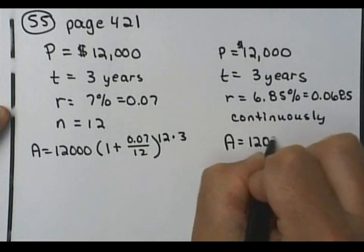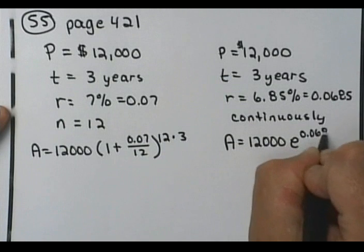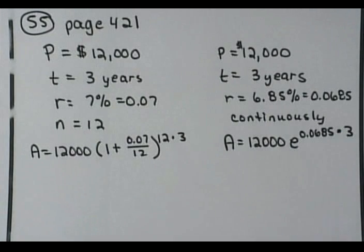And over here, I'm going to have 12,000 times e to the 0.0685 times 3. Alright, do both of those, and let's see which one of them yields me my best investment here.